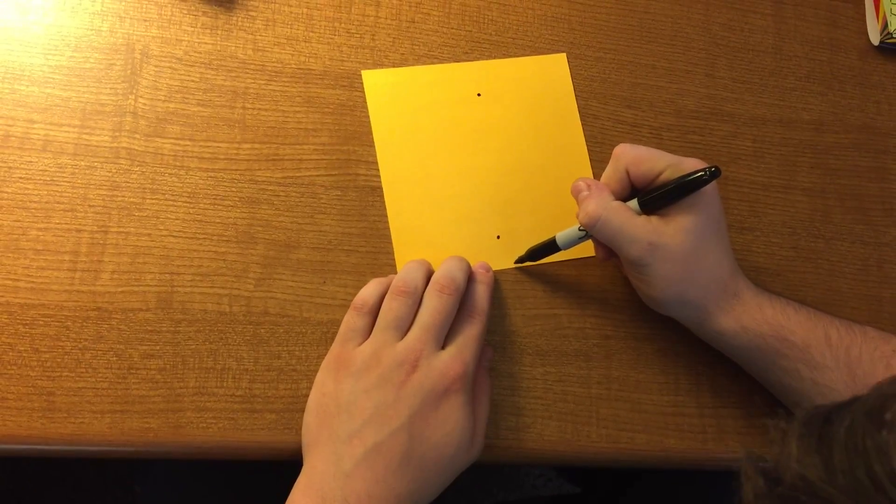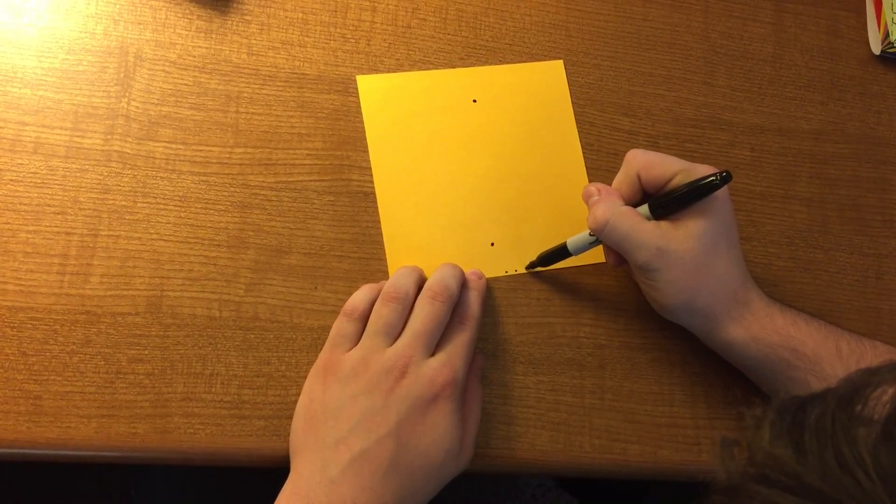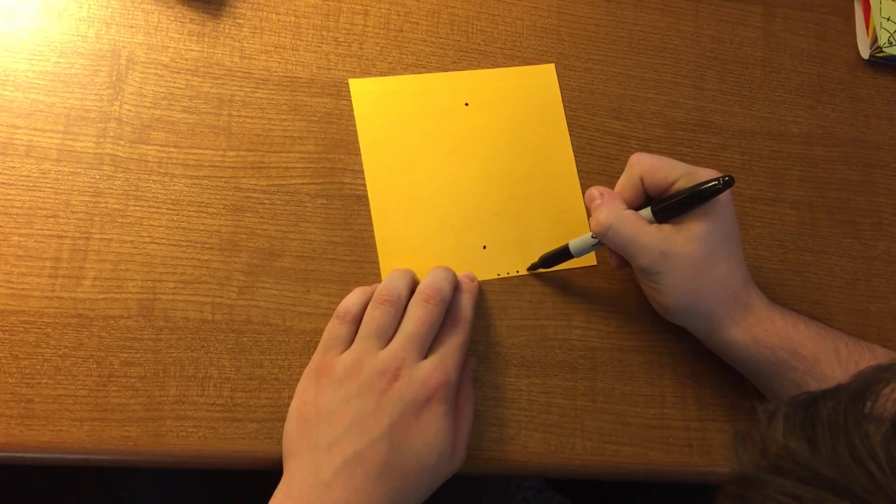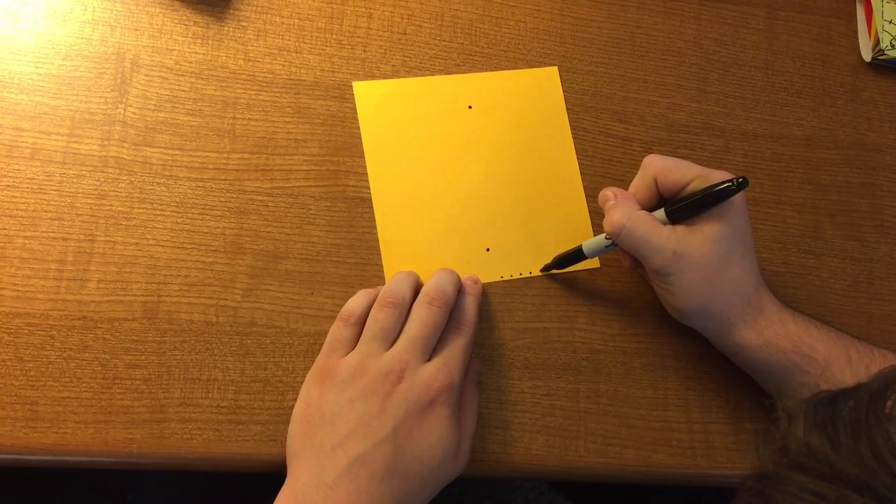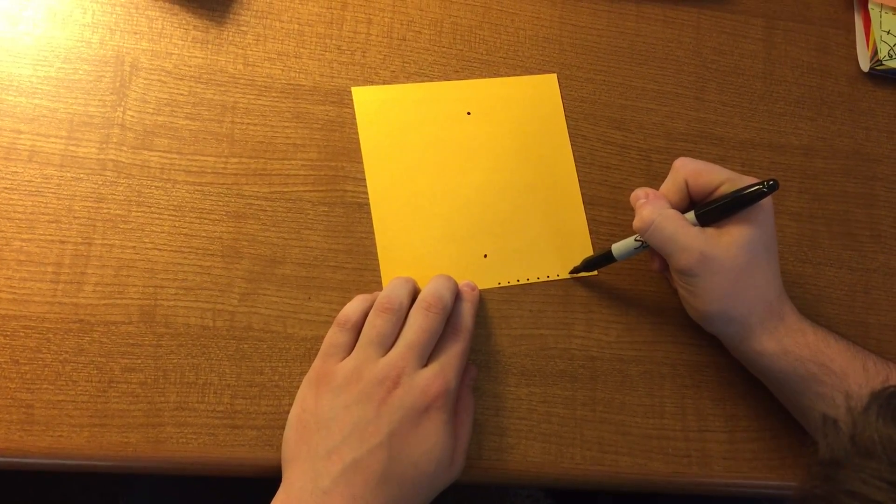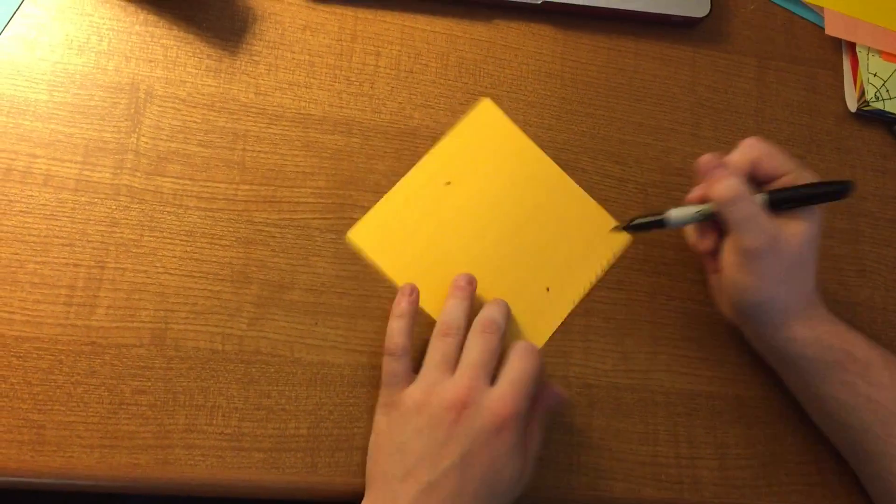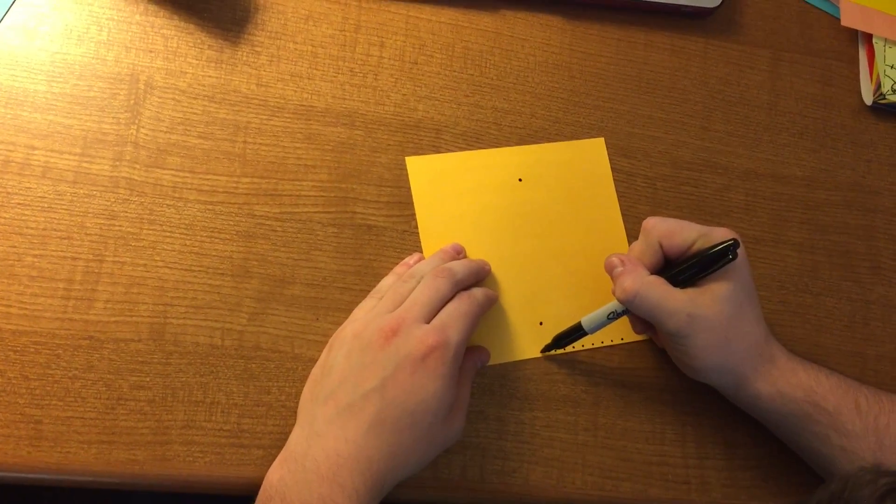Okay, so I'm going to then start putting points along the bottom edge here, and I'm going to try to do even amounts. All right, and I'm going to try to do the same on this side as well.